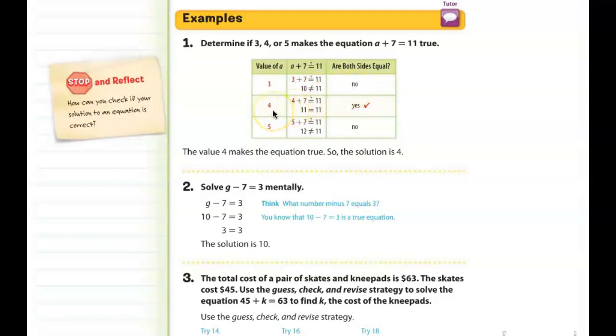So if we do the same thing and put 4 in, 4 plus 7 does equal 11, and 11 is equal to 11. So that is the correct answer. And just to try the last one, 5 plus 7 is 12, and 12 does not equal 11. So that one is not true. The only answer that A could be is A is equal to 4.